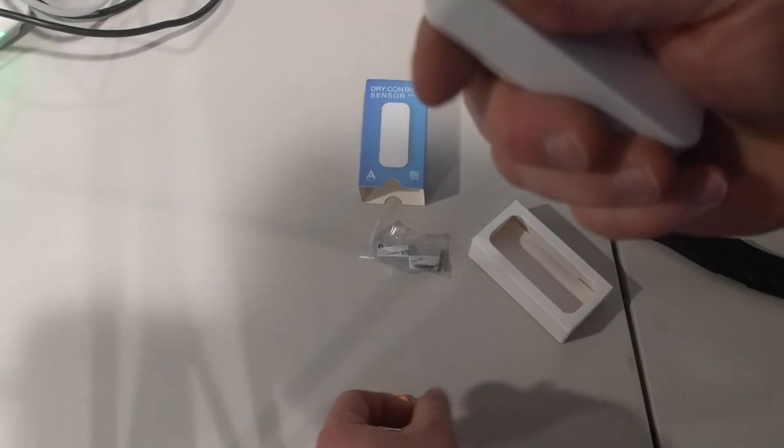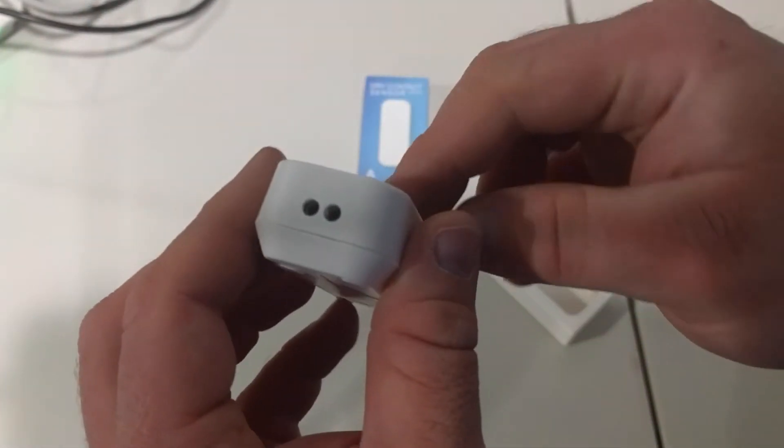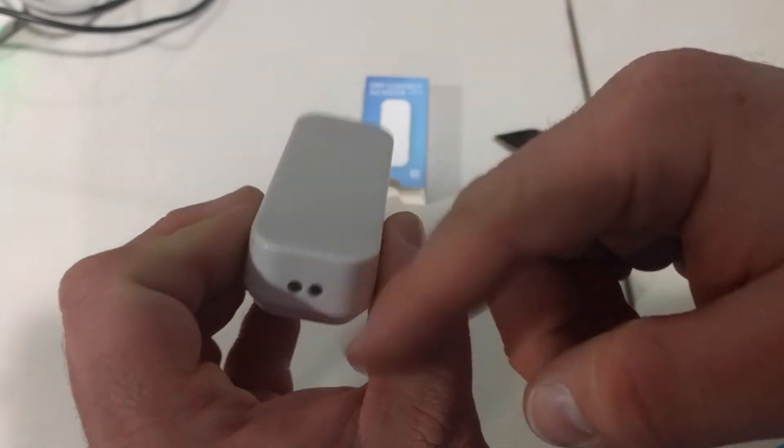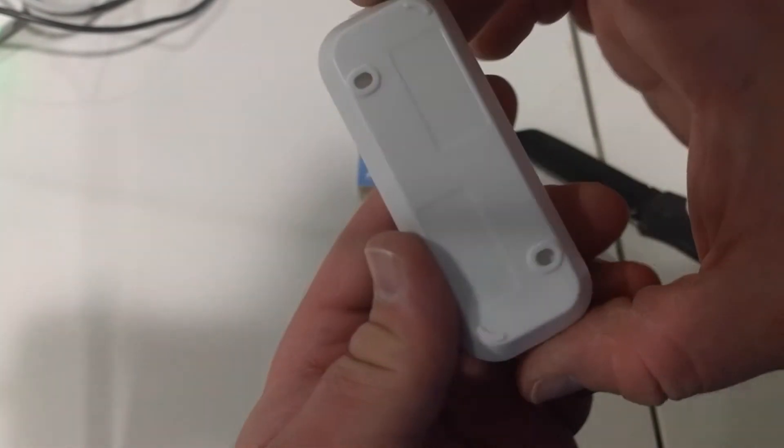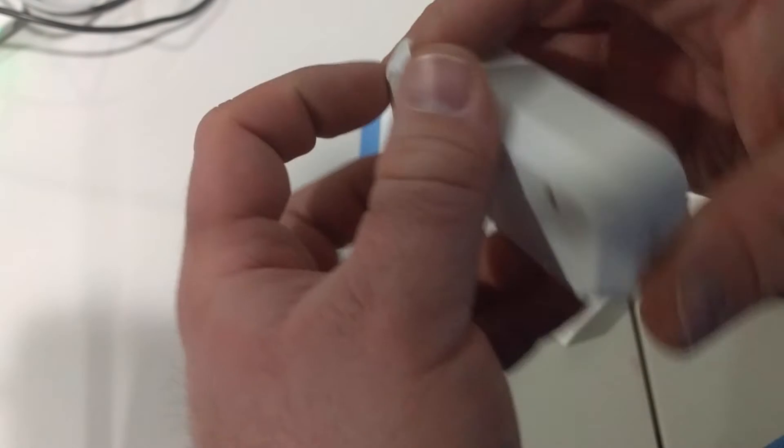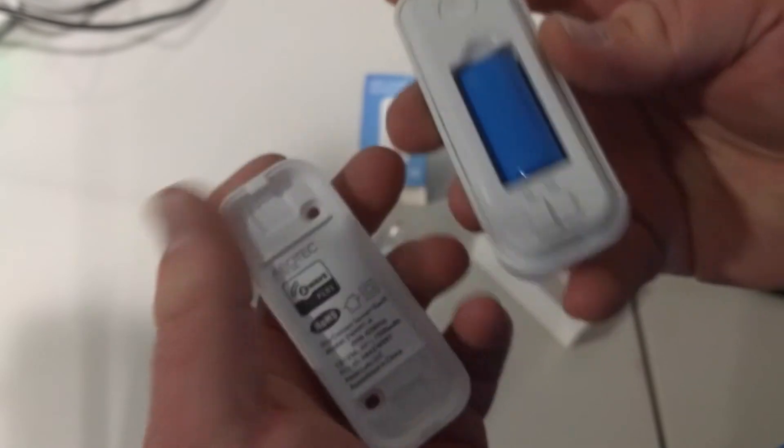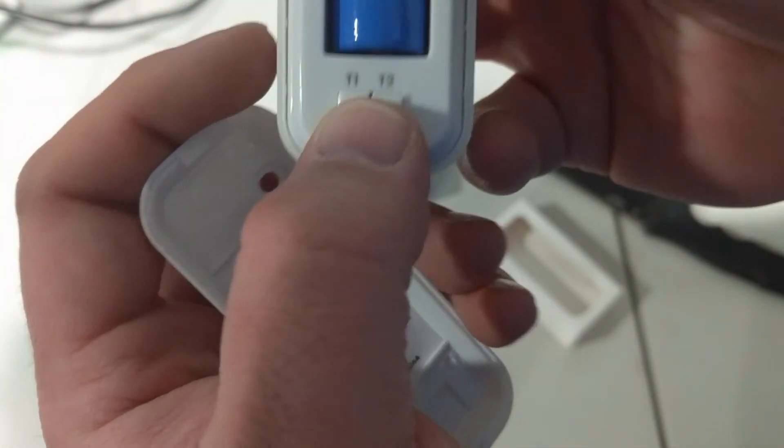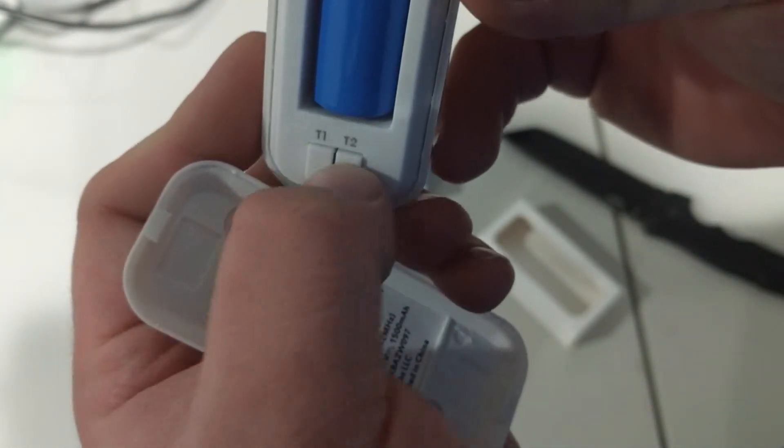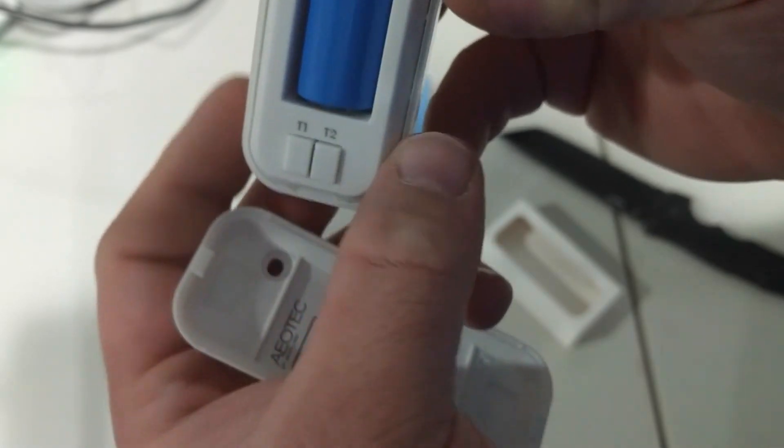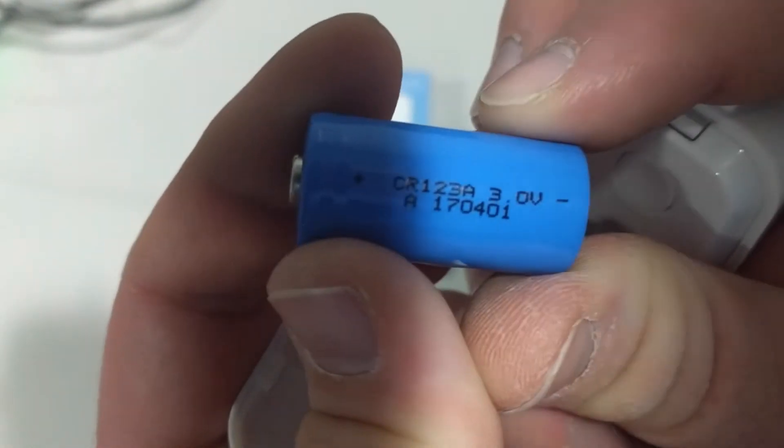Yeah, so this is very similar in size except the water one has leads already coming out of it. The back. The button pops off here. Then we have T1 and T2.